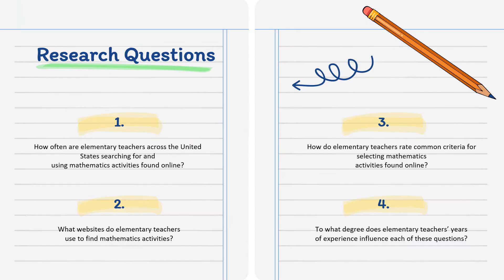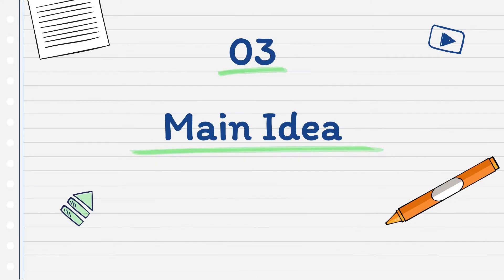The subject of math tends to be viewed as difficult since it depends heavily on formulas and theories. This article includes a literature review focused on identifying and documenting elementary math teachers' preferences or habits for choosing online tools used in the classroom. There are four research questions driving the main purpose of this study: how often are elementary teachers across the United States searching for and using mathematics activities found online; which websites they're mainly using; how they're rating the common criteria for selecting math activities found online; and to what degree does teachers' years of experience influence each of these questions.